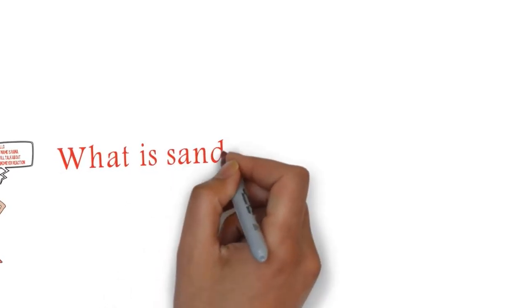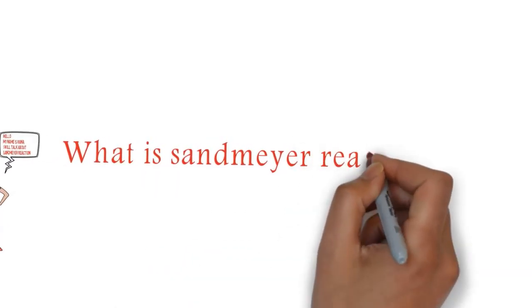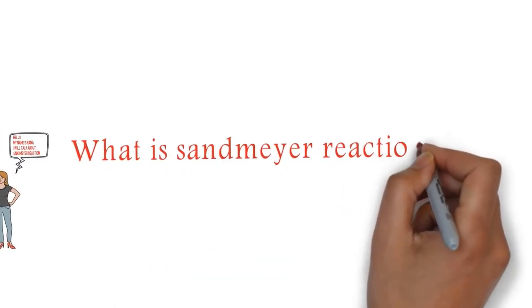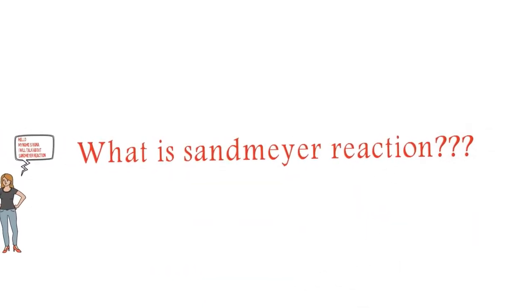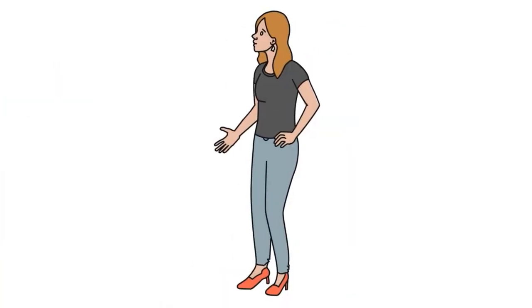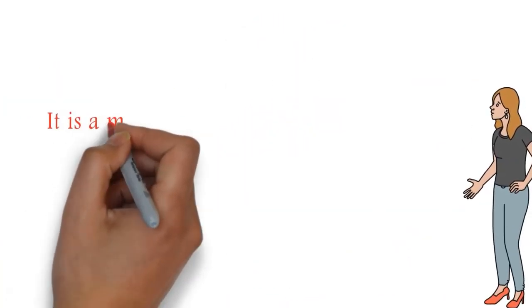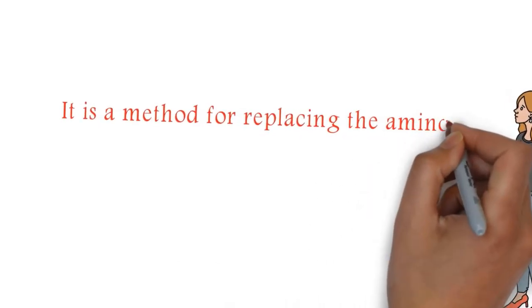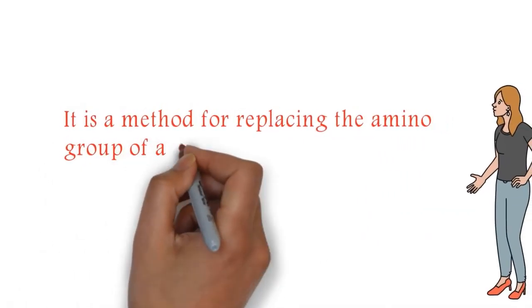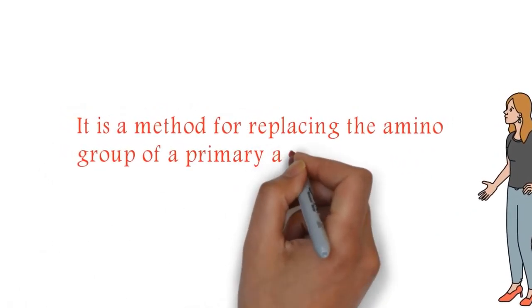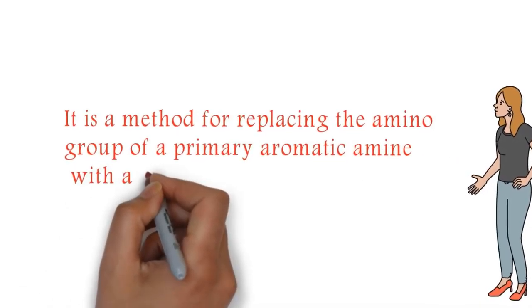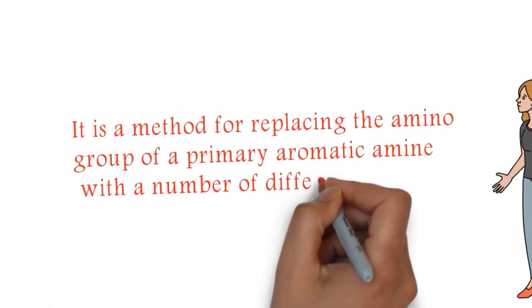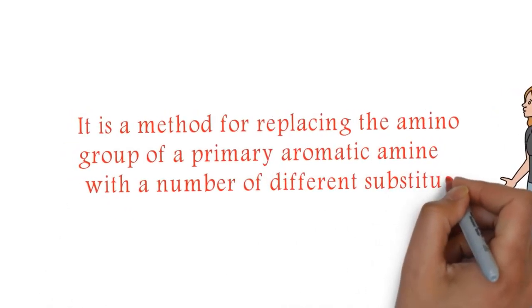What is the Sandmeyer reaction? It is a method for replacing the amino group of a primary aromatic amine with a number of different substituents.